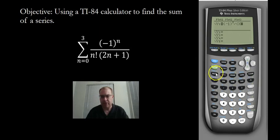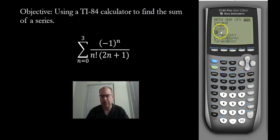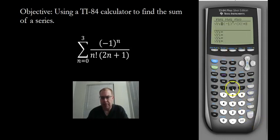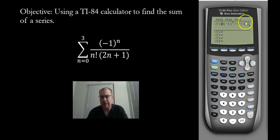Factorial is under Math. Click on Math and then go to Probability. Scroll down until you see the fourth option, which is the factorial. And then multiply it by 2x plus 1. Make sure you close the parentheses. So there's our nth term — except that it's in terms of x, which is okay.